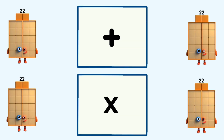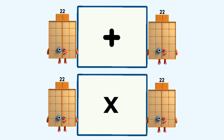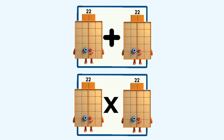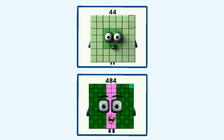22 plus 22 and 22 times 22 equals 44 and 484.